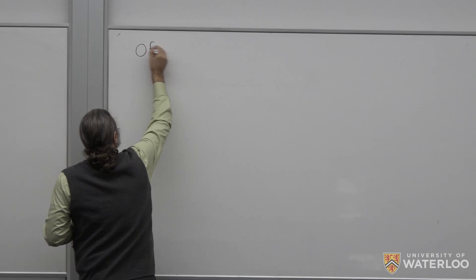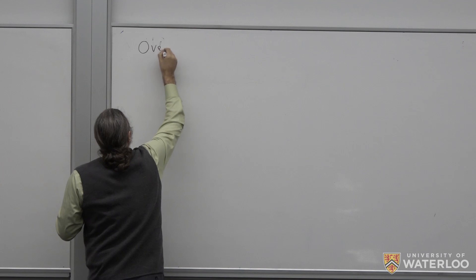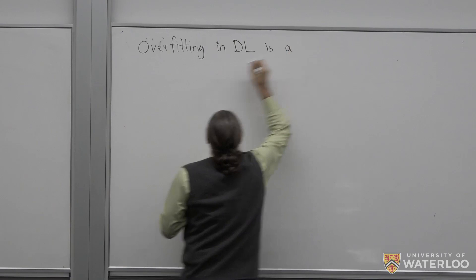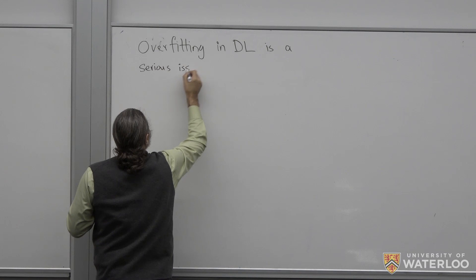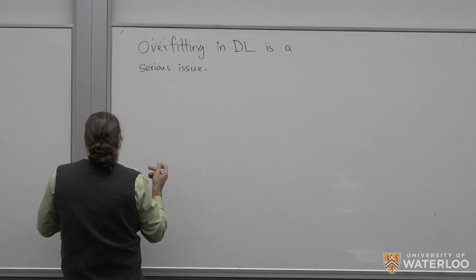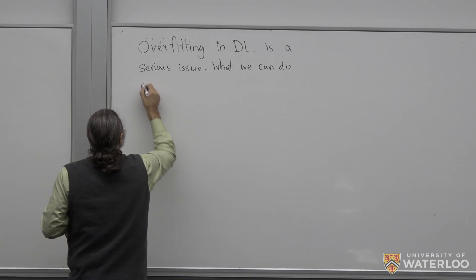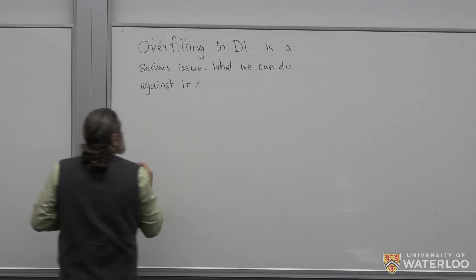We want to finish deep learning — as much as one can finish it — and move on to a new subject. We still have to talk a little bit about some aspects of deep learning. One important thing is that overfitting in deep learning is a serious issue, actually more so than in shallow networks. There are several things we can do against it.